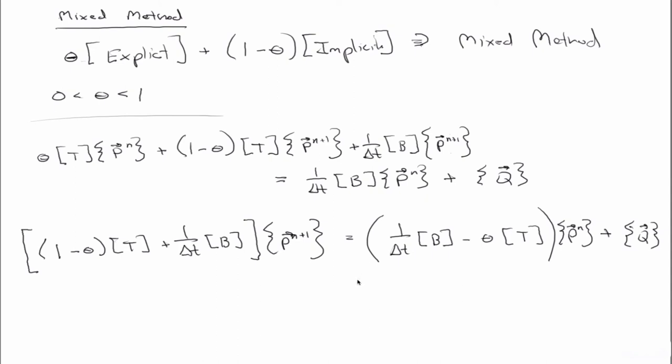Okay. So, one special case of this is for theta equals to 1 half. For theta equals to 1 half, this method is then called the Crank-Nicholson method.